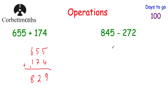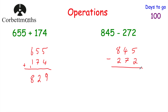Now let's have a look at our subtraction. Again, feel free to pause and try it yourself. So we've got 845 subtract 272. We line up the units, the tens and the hundreds, then put our line beneath. 5 take away 2 is 3. For 4 take away 7 we borrow from the 8, making it a 7, giving us 14 take away 7 which is 7. And 7 take away 2 is 5. So 845 subtract 272 is equal to 573.